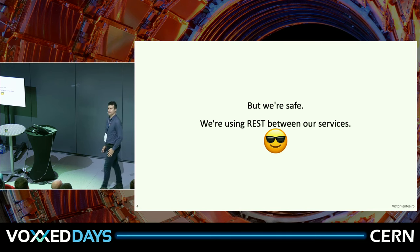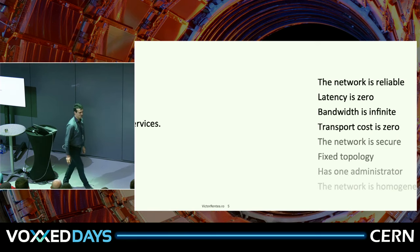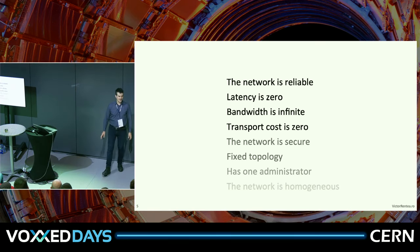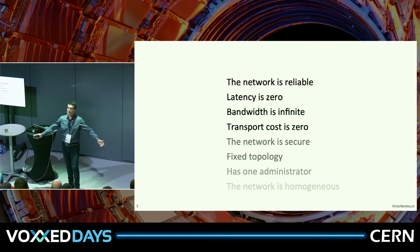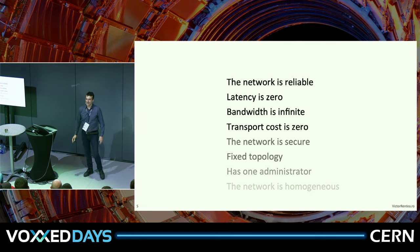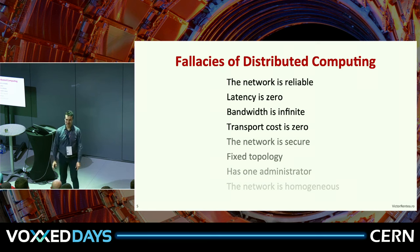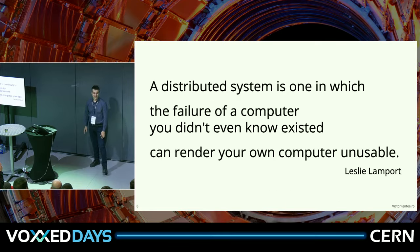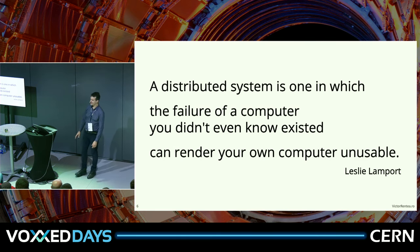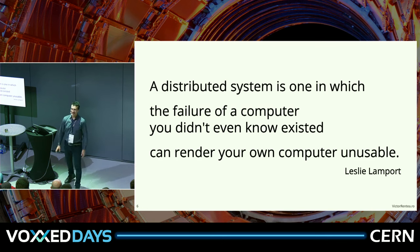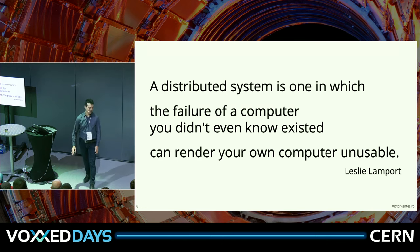But we're safe because we use REST between microservices. What can go wrong? After all, we all know that network is reliable, has zero latency, infinite bandwidth and zero cost. And then you wake up. Welcome to the fallacies of distributed computing. A distributed system is one in which the failure of a computer you didn't even know existed can render your own machine unusable — a beautiful definition from Leslie Lamport.